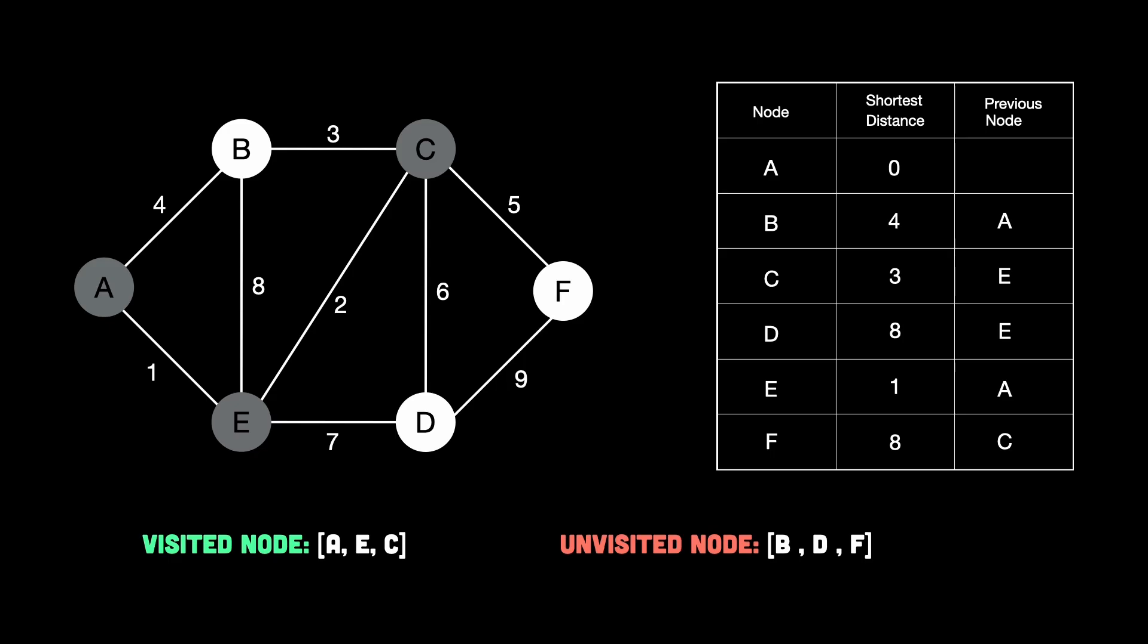Now again, we go through the same process. Let's check the next smallest unvisited node again. The smallest unvisited node is B with 4. So let's visit B. Neighbors of B are A, C, and E. However, they are all visited. So we don't have to check any of them. So the table stays the same for now. And we mark the node B as visited.